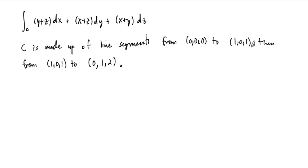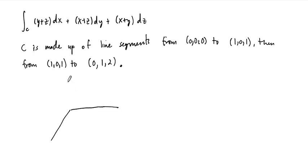One segment goes from (0, 0, 0) to (1, 0, 1), and then the other picks back up from that point and goes to (0, 1, 2). So let's start by sketching the curve and trying to get an idea of what this looks like.